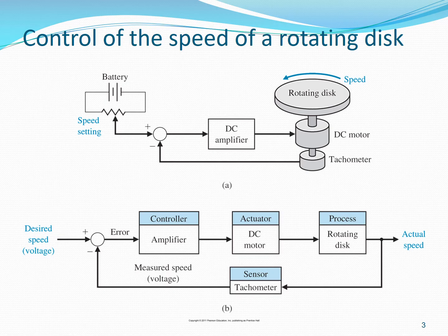The desired speed is set by an arrangement consisting of a battery and variable resistor. The difference between desired and actual speed, called the error signal, is computed. There is a DC amplifier which amplifies the error signal — it acts as a controller. The amplified error signal is then converted into a physical actuation signal by a DC motor. Therefore, the DC motor is the actuator in this particular system.